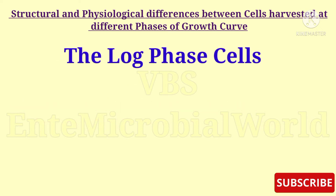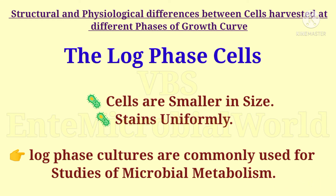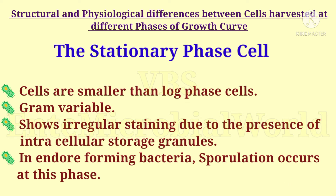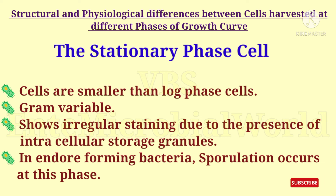In the log phase, the cells are smaller and stained uniformly. Cells in the logarithmic phase of growth are the most uniform and in defined conditions, so log phase cultures are commonly used for studies of microbial metabolism. In the stationary phase, cells are smaller than log phase cells and are gram variable, showing irregular staining due to the presence of intracellular storage granules. In endospore-forming bacteria, sporulation occurs at this phase.